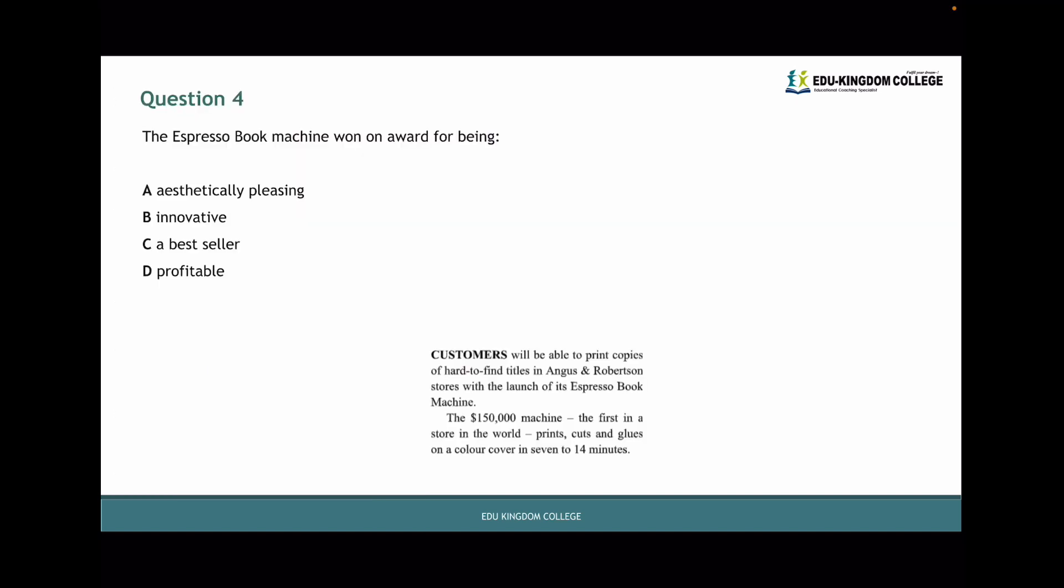The Espresso book machine won an award for being what? This is taken from the very first two sentences of the extract. Customers will be able to print copies, and the second part, it's the first in the world that prints, cuts, and glues on a color cover in 7 to 14 minutes. So this invention is quite new. And when you think about it, it's really convenient. They're putting two machines into one, one that can make coffee, but at the same time print books. For that reason, we're going to call it innovative. Innovative is when something is new, advanced, and convenient. We usually use this word to describe new inventions. The fact that it's doing two tasks simultaneously is a pretty big feat.